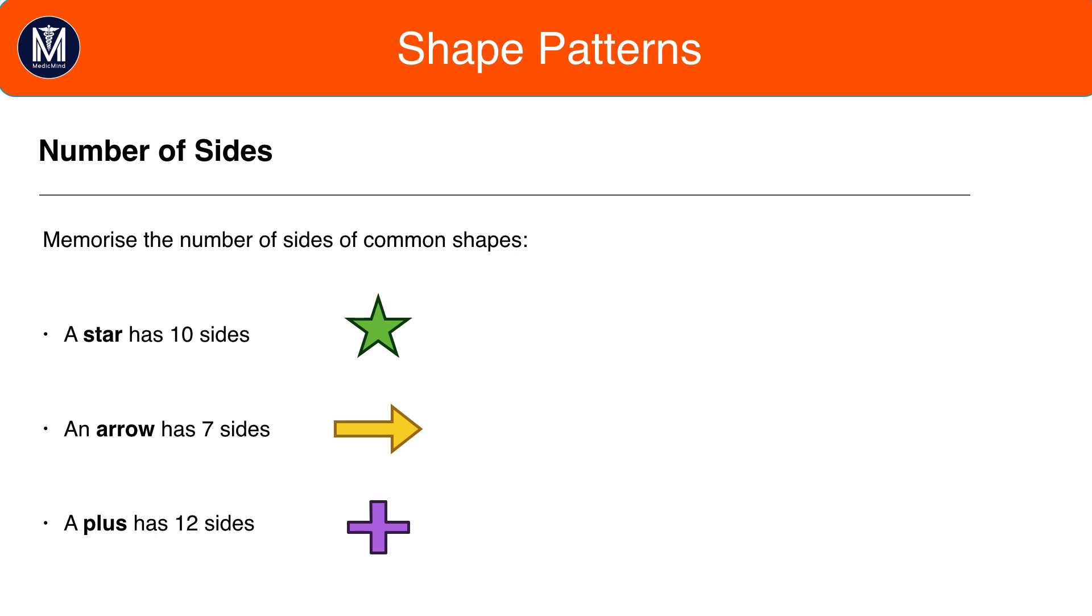It's useful to memorise the number of sides of common shapes to save you time in the exam. For example, a star has 10 sides, an arrow has 7 sides, and a plus has 12 sides.